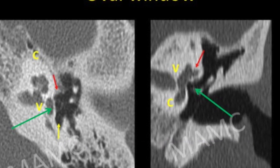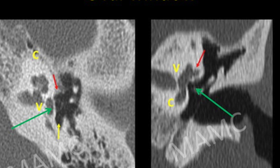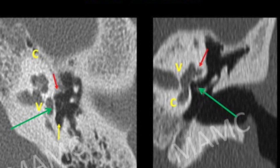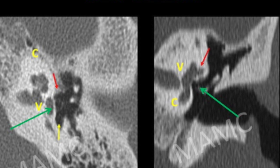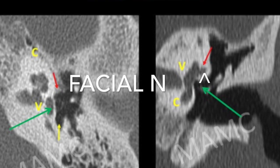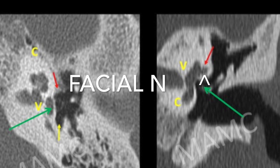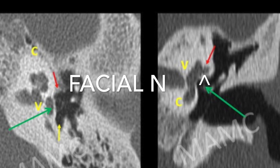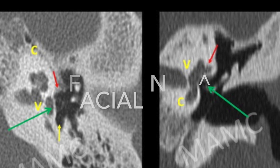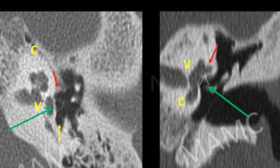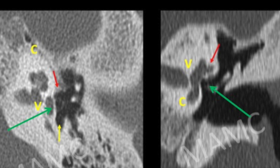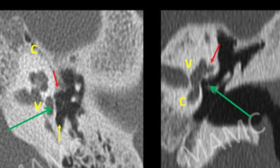On the coronal image, superior to the oval window lies the lateral semicircular canal, shown by the red arrow. Between the oval window and the lateral semicircular canal lies the facial nerve — a small circular dot seen between these two structures — which is the tympanic segment of the facial nerve. Medial to the oval window is the vestibule, and inferomedial is the cochlea.